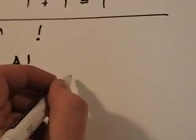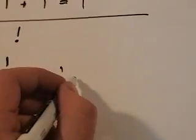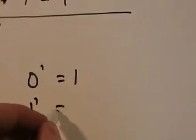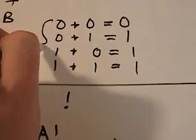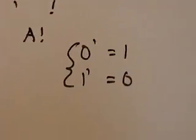So the NOT operator is fairly simple. 0 NOT is equal to 1. 1 NOT is equal to 0. And so let's do this. So let's do some examples.